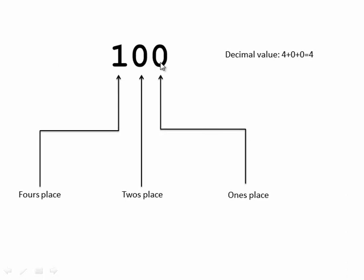Next, we can't do anything more with the 1 and 1, so we go ahead and move the 4's place up to 1 and reset the others. Now we've got 4 plus 0 plus 0 equals a total of 4. To get up to 5, we add 1 to the 1's place. Then to get up to 6, we reset the 1 back to 0 and add 1 to the 2's place, so now we've got 4 plus 2 equal to 6.